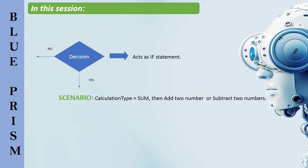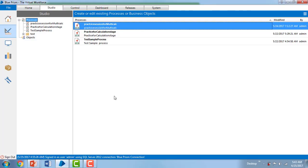The decision stage works by evaluating the result of an expression as either true or false. We have a scenario to work on: if we get the calculation type as 'sum' then we are going to add two numbers, or we are going to subtract two numbers. If the decision is true we sum the two values; if false we subtract from highest to lowest value.